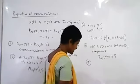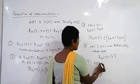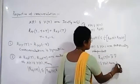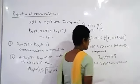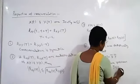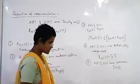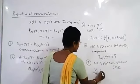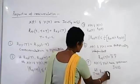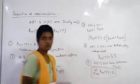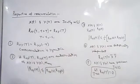The fifth property says that if x(t) and y(t) have zero mean and are jointly stationary, then as tau tends to infinity, rxy(τ) will be equal to zero. These are the five properties of the cross-correlation function.